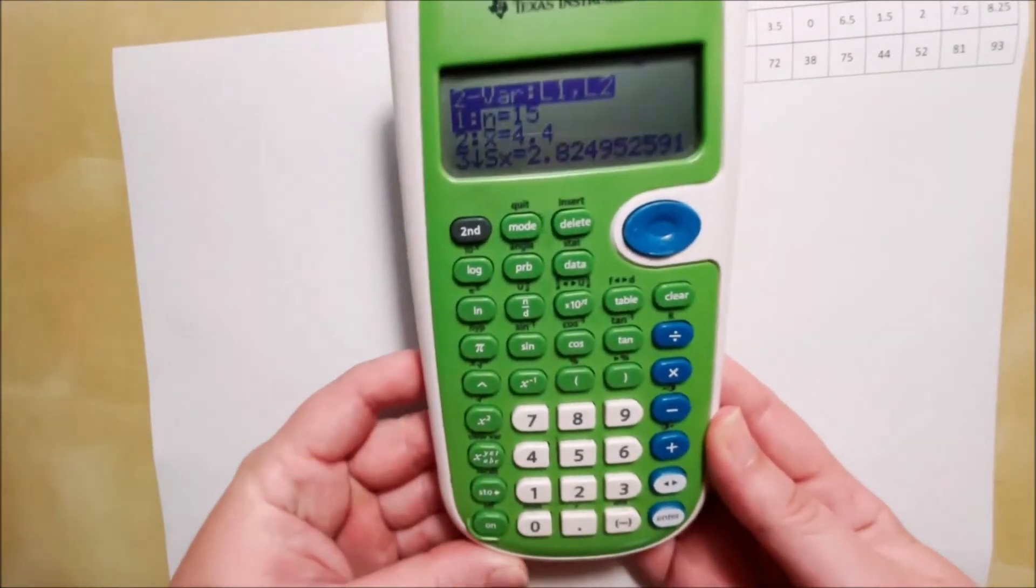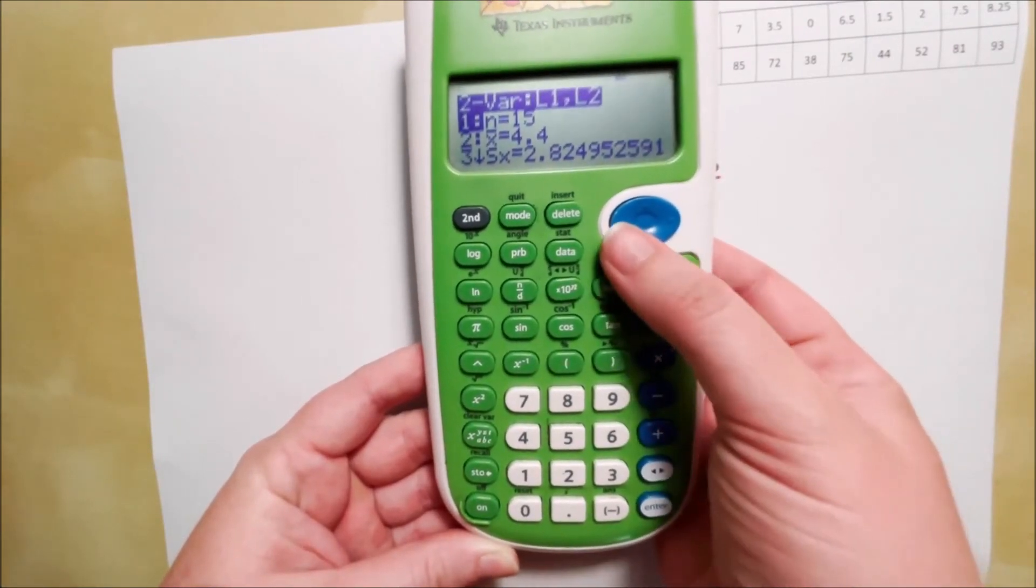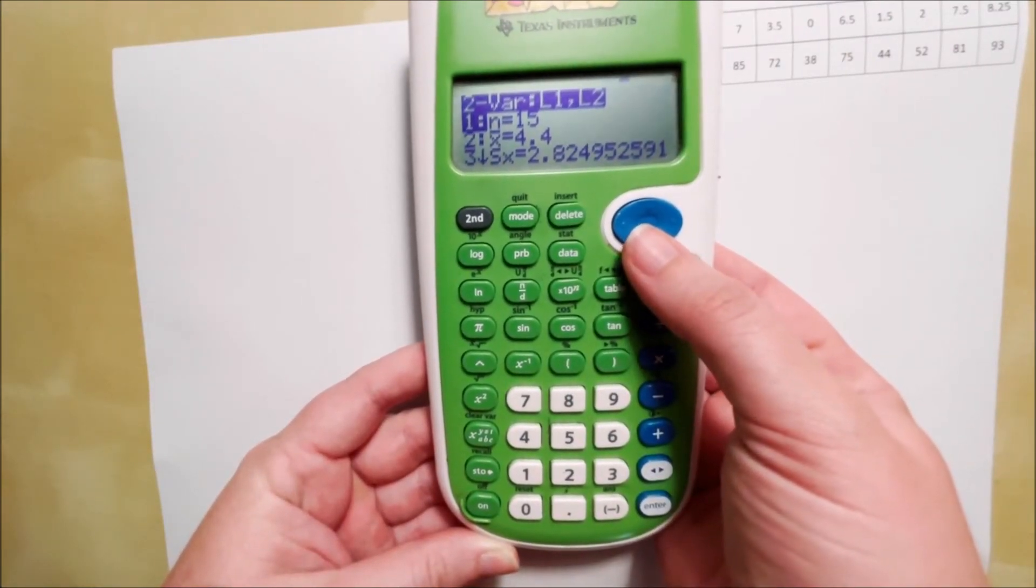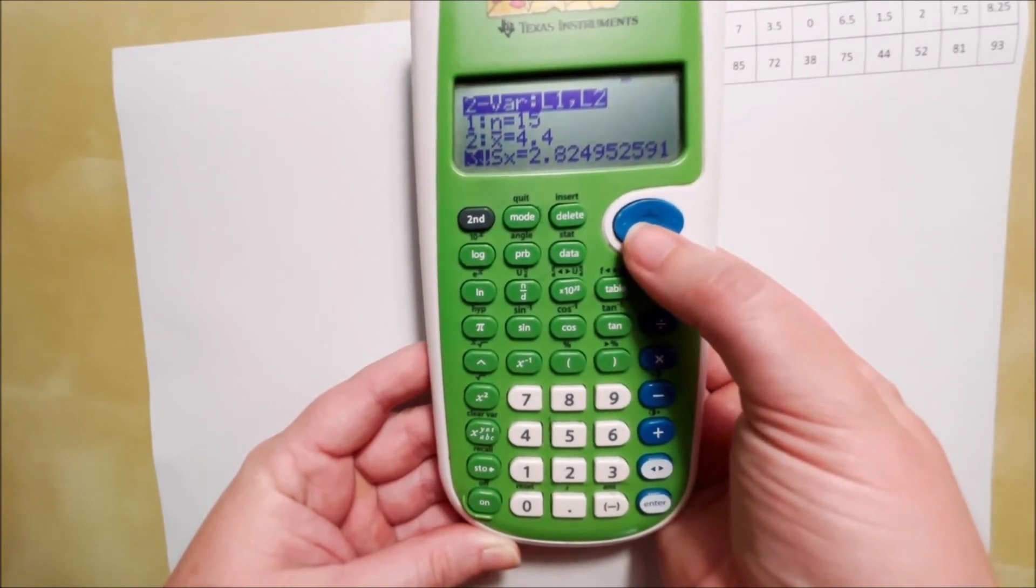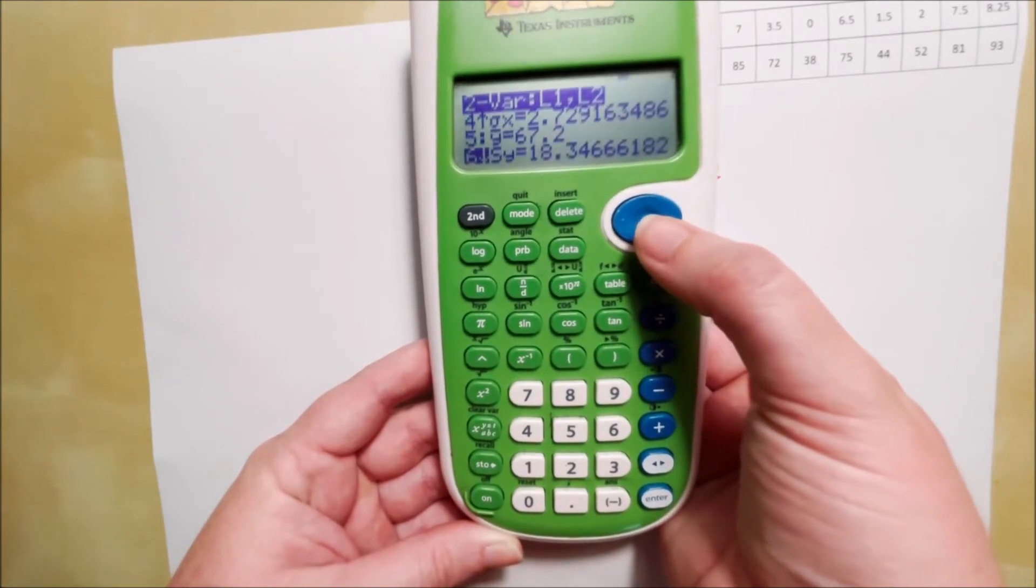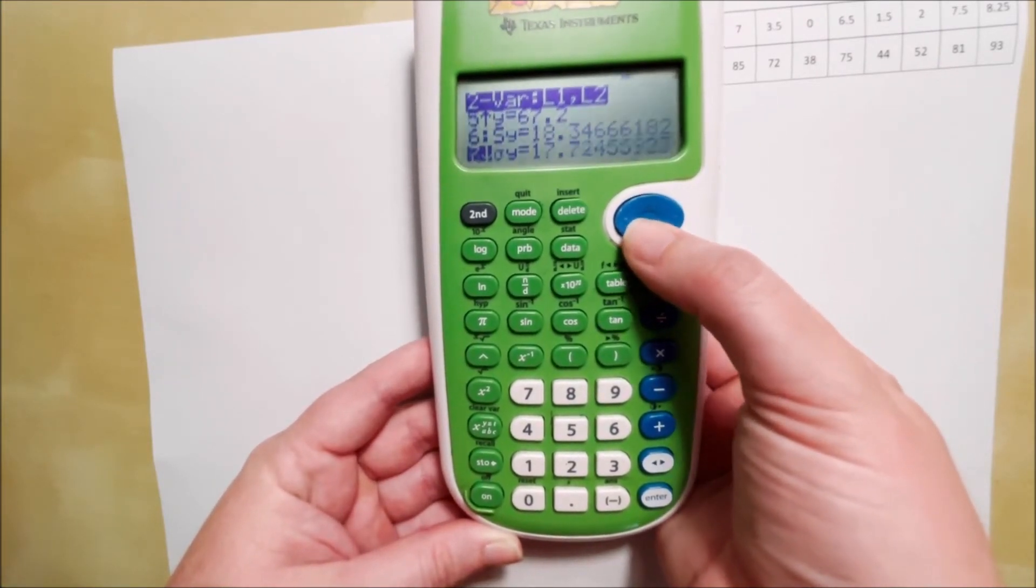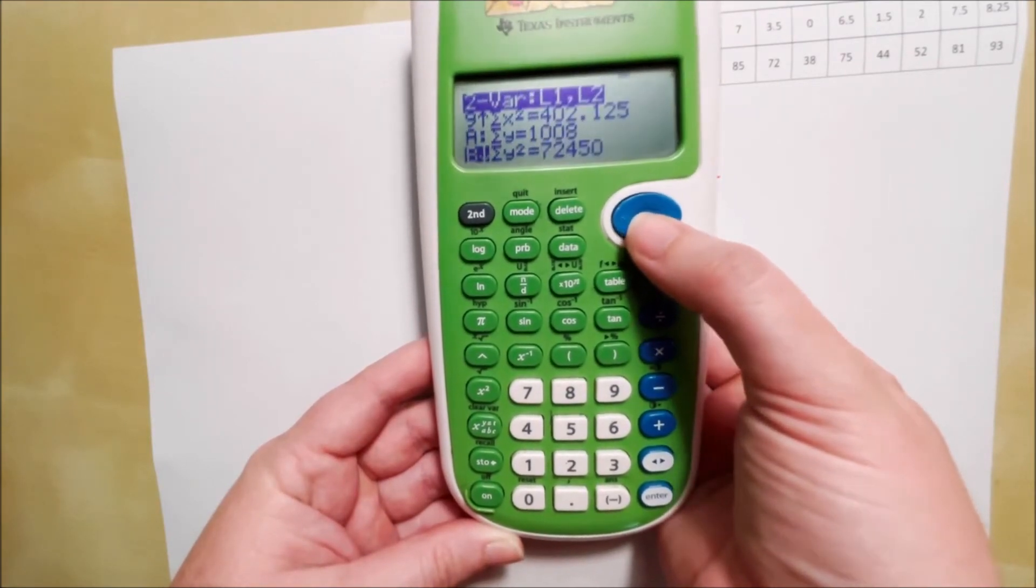Okay, now that will bring up this whole list of statistics. So the first one tells you that you have 15 data points, a sample size of 15. There's the mean of x, the sample standard deviation of x, the population standard deviation of x, the mean of y, the sample standard deviation of y, the population standard deviation of y. This stuff we don't need to worry about.